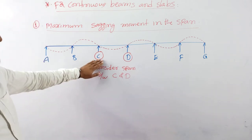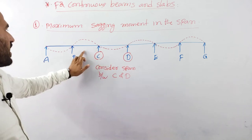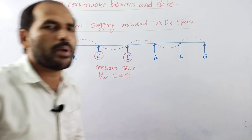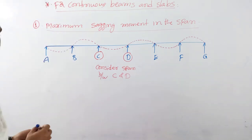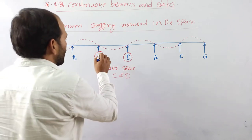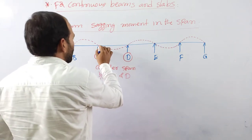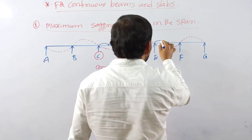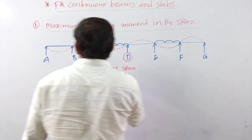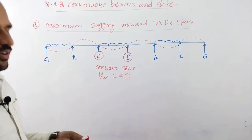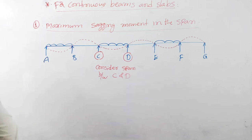Here we have sagging and hogging bending moments. Sagging is positive and hogging is negative. The bending moments are in imbalance, so we will balance the bending moment. For Case 1 — maximum sagging moment in the span — live load is placed on the span and on alternative spans, which should be loaded.